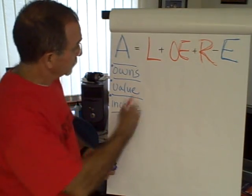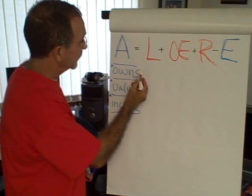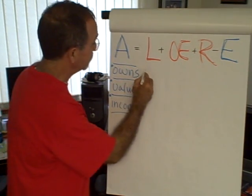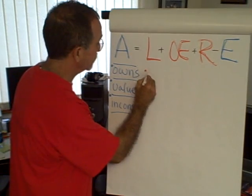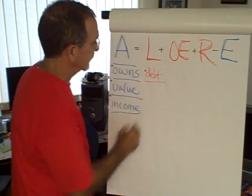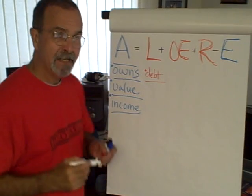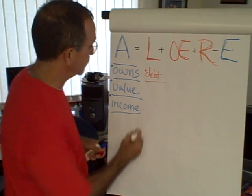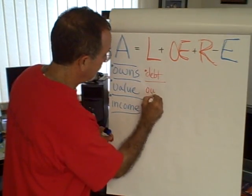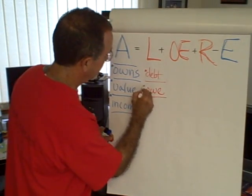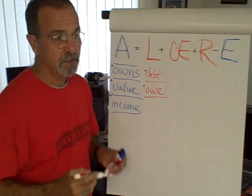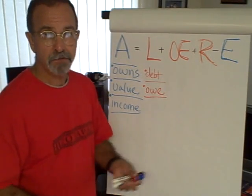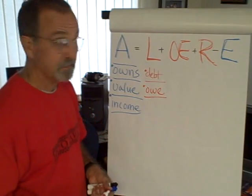So again, something the business owns should have value, and that value should be directly tied to its ability to help the organization earn income. Moving over to the right, a liability is another term for debt. A liability or debt of the organization is basically an amount that the organization owes to another organization, another business, or to an individual or individuals.